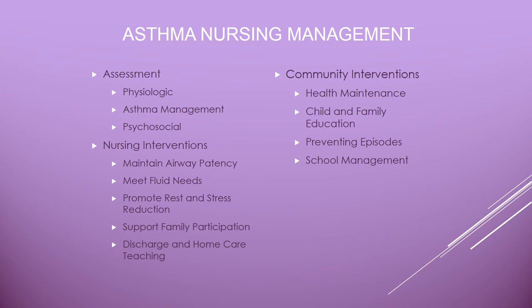For nursing assessment, assess airway, breathing, and circulation, perform a physical exam, and check pulse ox. If the child is known to have asthma, check medication history, history of present illness, past illnesses, and any alternative medical treatments tried. For the psychosocial assessment, consider how the child and parents are tolerating the episode. The nursing priority in asthma is airway patency — maintain an open airway by giving medications as prescribed, using rescue meds, and getting backup if needed.